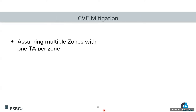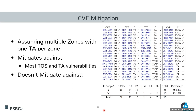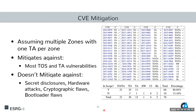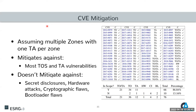For the security evaluation, we assumed multiple zones with one trusted application per zone, and looked at CVEs rated critical regarding TEEs — obtained from our previous work. We found that ReZone mitigates the majority of trusted OS and trusted application vulnerabilities because it prevents attackers from escalating privileges and compromising other parts of the system. ReZone does not mitigate against poorly implemented TAs that disclose secrets, hardware attacks, cryptographic flaws, or bootloader flaws. Overall, ReZone mitigates 87% of the critical CVEs, which is a quite significant number.